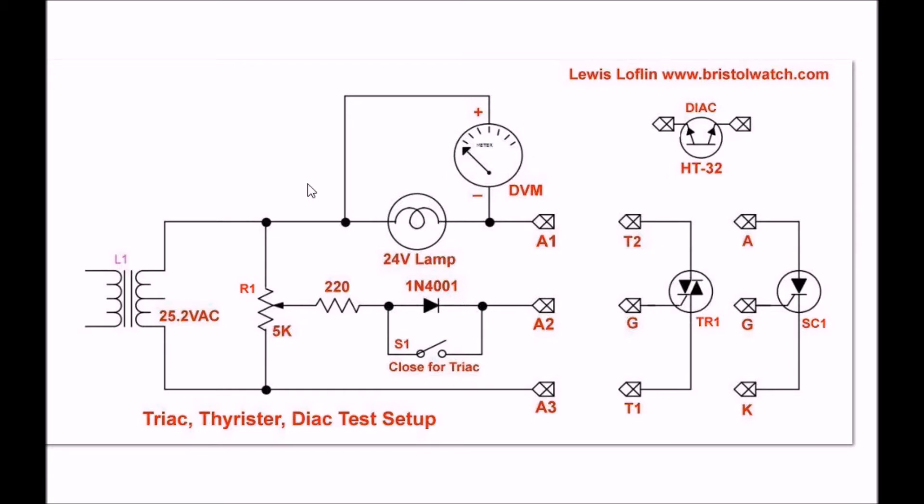Here is the schematic. I have a 25 volt AC, actually my transformer measures 28 volts coming in. We have a 5k potentiometer that controls the gate current to whatever device I'm testing. You have a dropping resistor and you have a diode in the gate circuit. This is to be used with SCRs, otherwise when you're testing triacs you have to close S1. My load is a 24 volt incandescent panel lamp and across that panel lamp is connected to the red DVR you saw in the video.